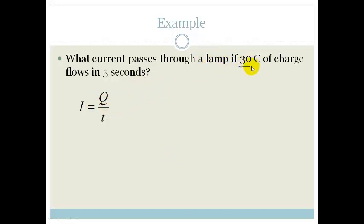Our Q is 30 coulombs, so that is going to be 30. Our time conveniently is already in seconds, so it's 30 divided by 5, which is 6 amperes. So that's a nice easy example.